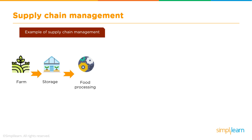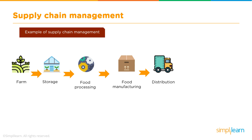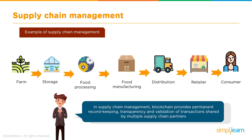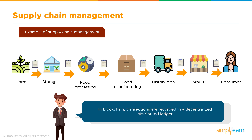Let's look at an example of supply chain management. The product starts on the farm, goes through storage, undergoes food processing, is manufactured, distributed, given to the retailer, and finally reaches the customer. Blockchain is able to provide a permanent record, a high level of transparency, and the ability to validate transactions shared across multiple supply chain partners — recorded in a decentralized distributed ledger.